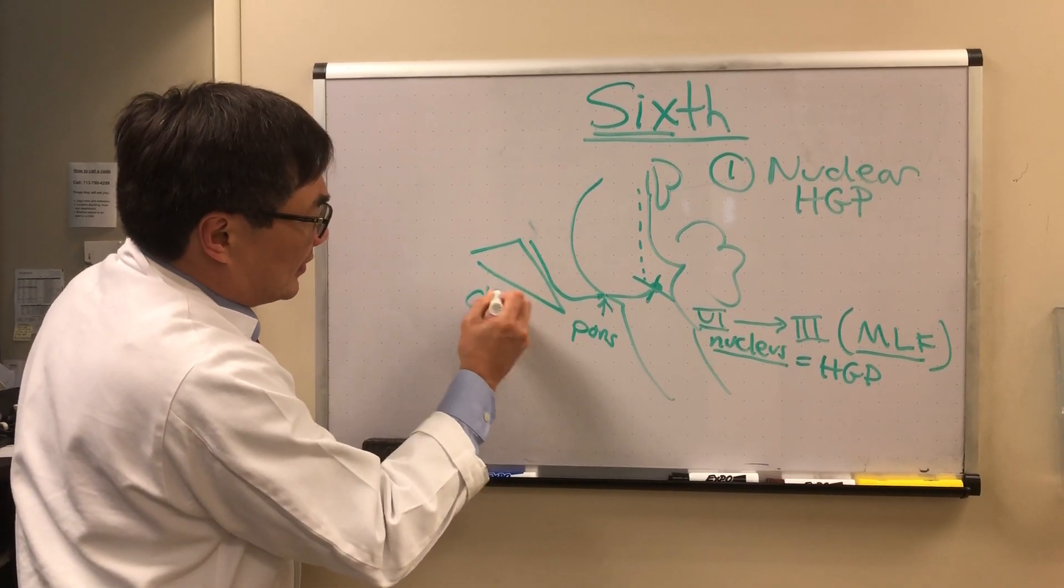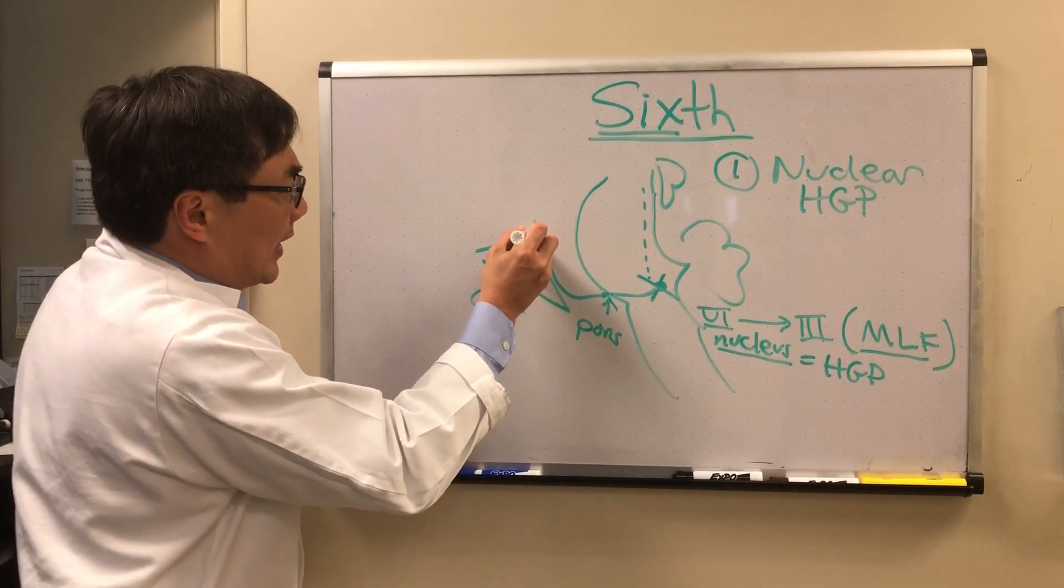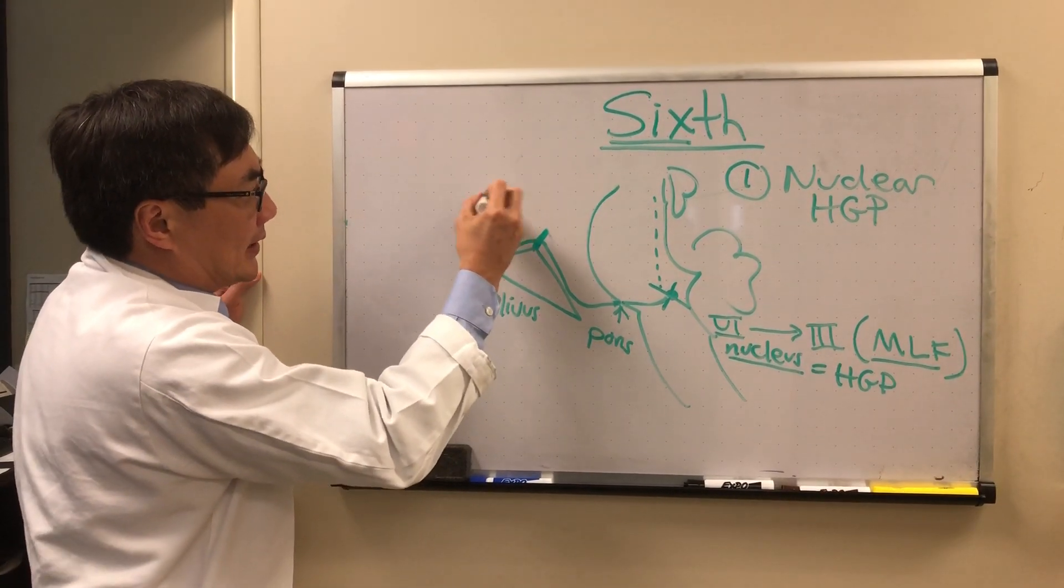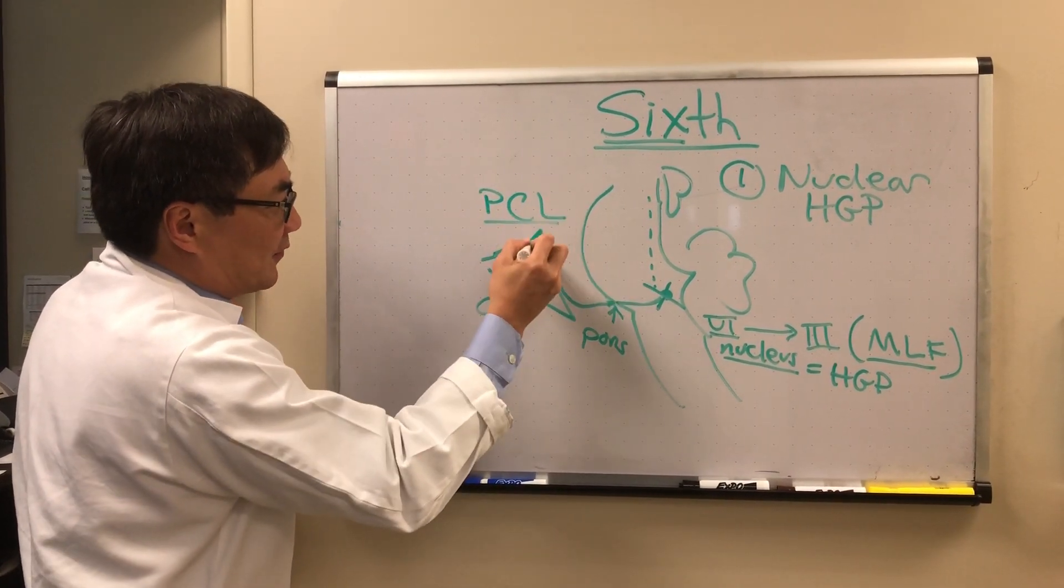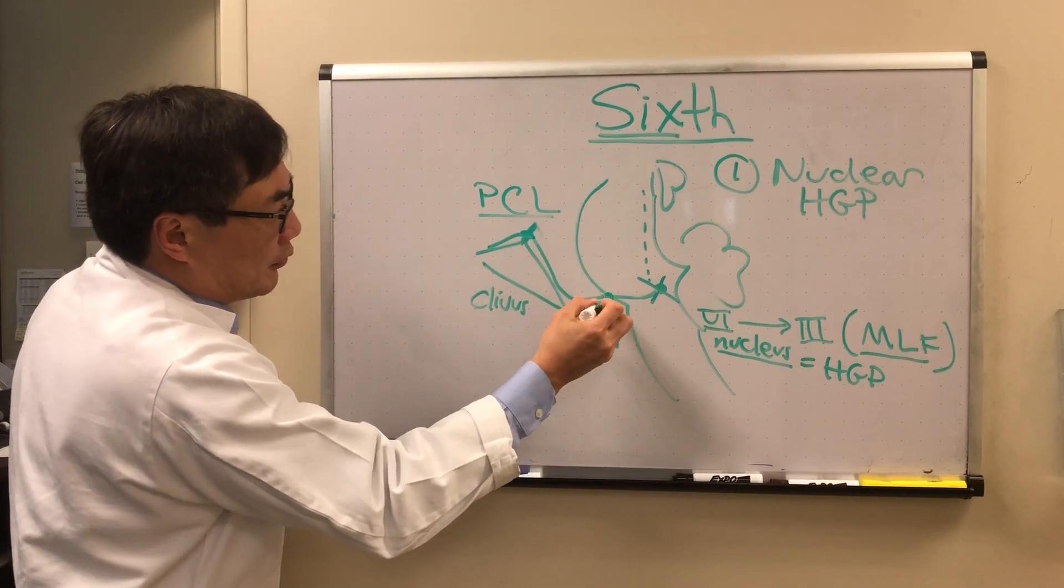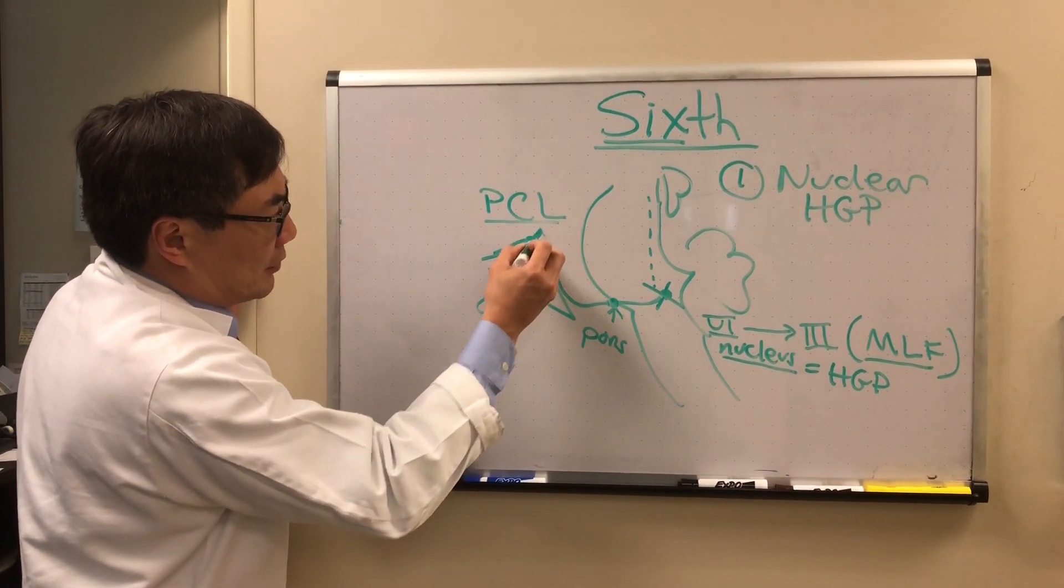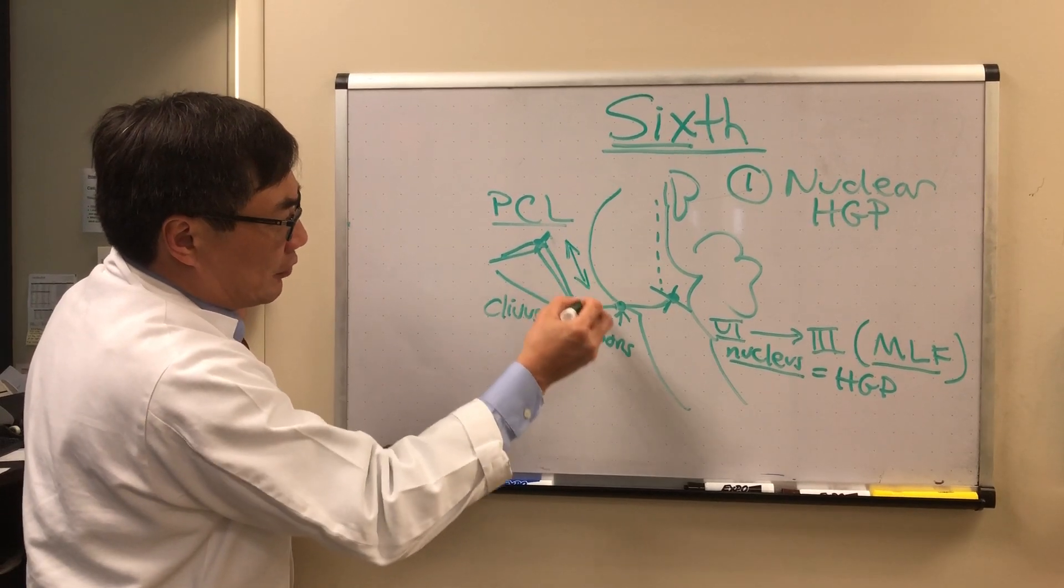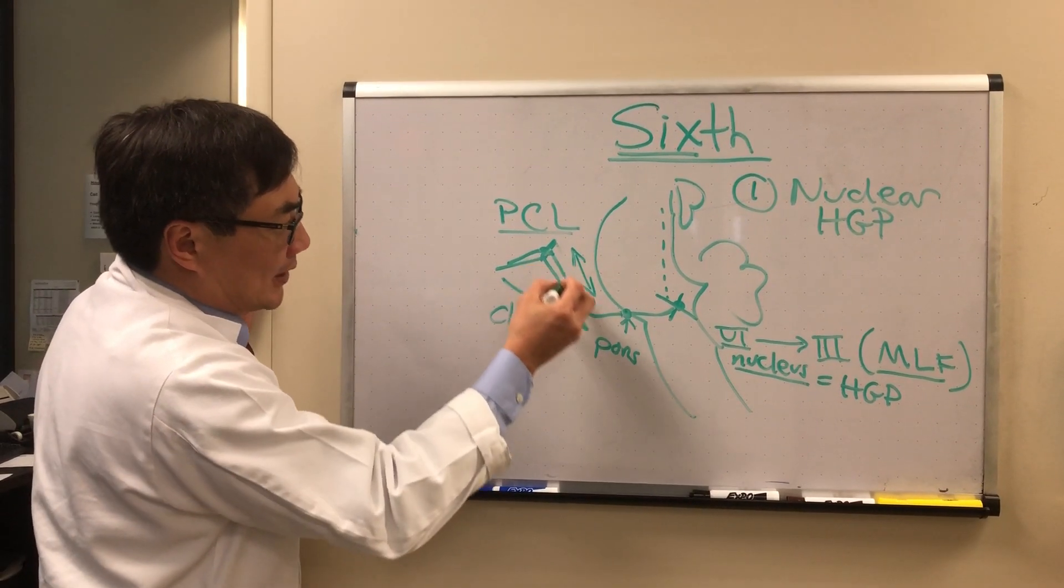clivus. Clivus means slope, so this sloping bone. Then it turns 90 degrees here. At that location it's also tethered at the petroclinoid ligament. So it's tethered at two locations: the root exit zone at the pons and at the petroclival ligament. That means things that cause increase or decrease of intracranial pressure affecting this subarachnoid segment can result in what we would call a non-localizing sign of increased intracranial pressure or decreased intracranial pressure, a non